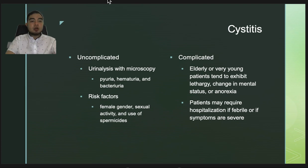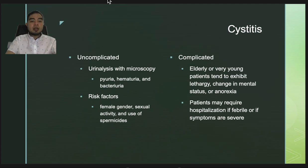Risk factors for uncomplicated cystitis include female gender, sexual activity, and use of spermicides. Elderly or very young patients tend to exhibit lethargy, change in mental status, or anorexia, which may confound the diagnosis of urinary tract infection. Patients may require hospitalization if febrile or if symptoms are severe.